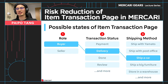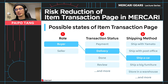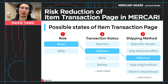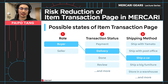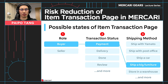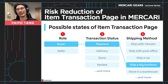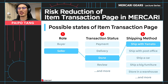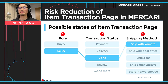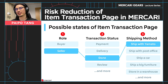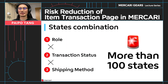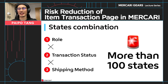We mainly have three different aspects of the item transaction page: different roles like buyer and seller, different transaction statuses — payment, delivery, review, and done — and different shipping methods. For example, when you open the item transaction page, you might be a buyer about to pay for the item at a convenience store, or a seller about to send an item using the Post Office. All different states may contain different information and actions, giving us more than a hundred states in this one single page.